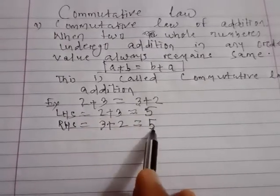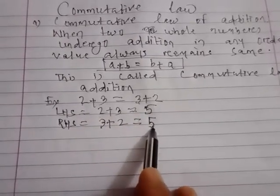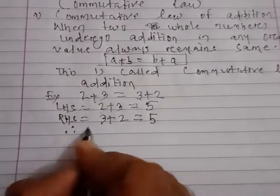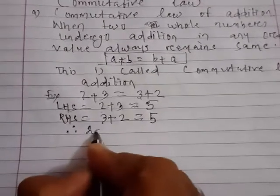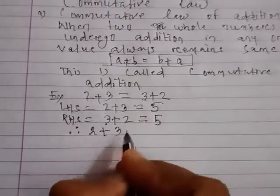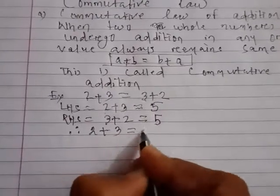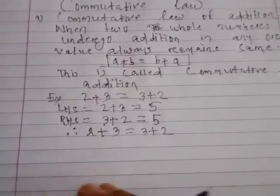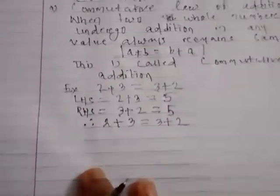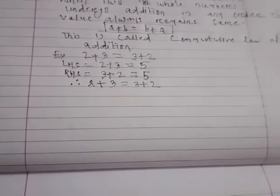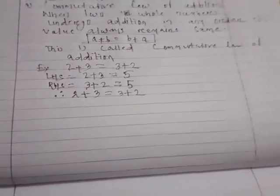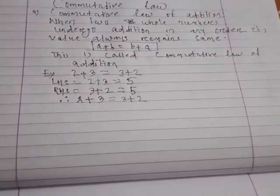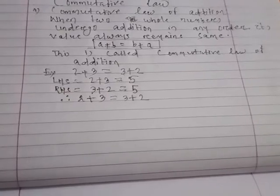So 2 plus 3 equals 5 and by changing the order, 3 plus 2 also equals 5. Hence 2 plus 3 is equal to 3 plus 2. The value remains the same. This is called commutative law of addition.